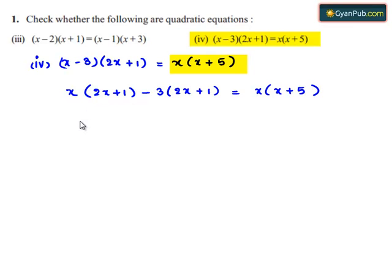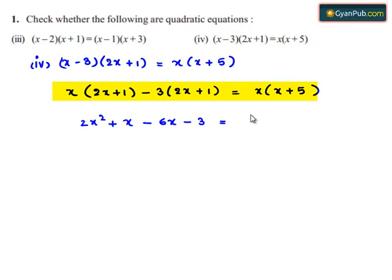x times 2x is 2x square, and x times 1 is x, and minus 3 times 2x is minus 6x, minus 3 times 1 is minus 3. This is equal to x square plus 5x.